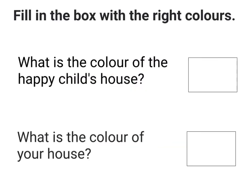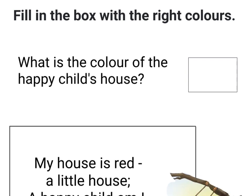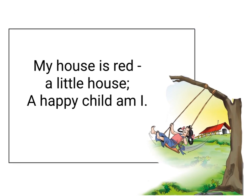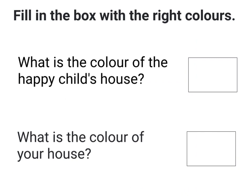The next exercise is: fill in the box with the right colors. We will first read the questions and color the box with the answer. The first question is: what is the color of the happy child's house? Going back to the poem, it says 'My house is red, a little house, a happy child am I.' This tells me that the happy child's house is red, so I will color the box red.